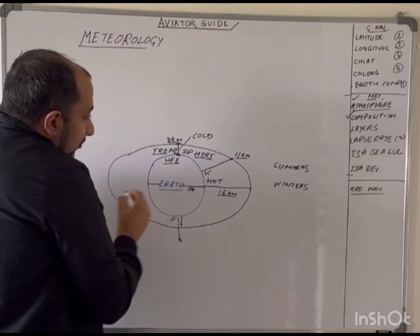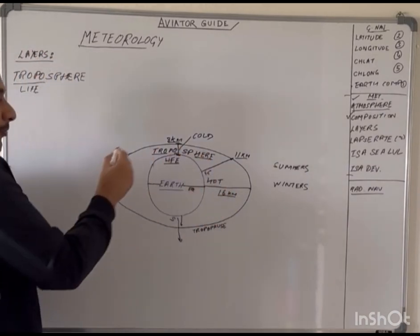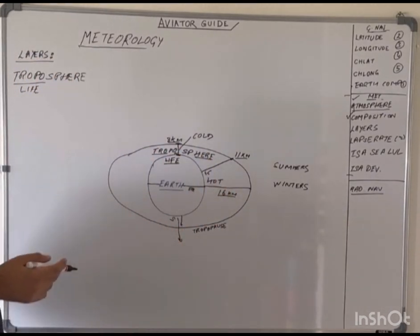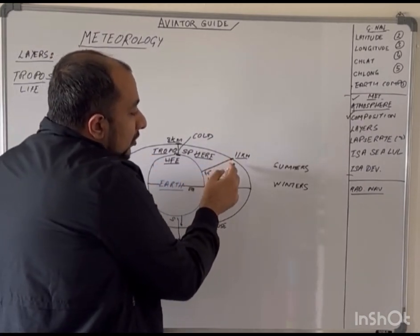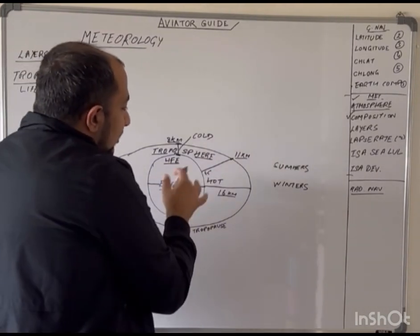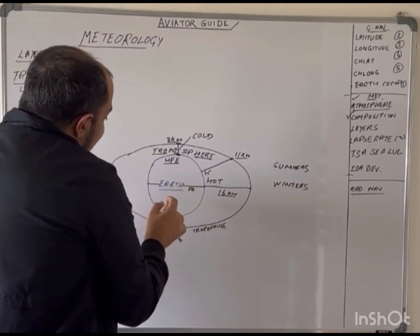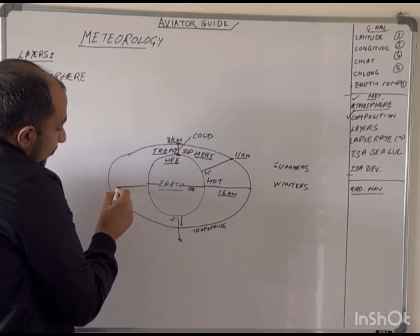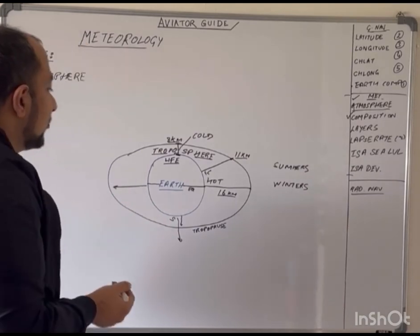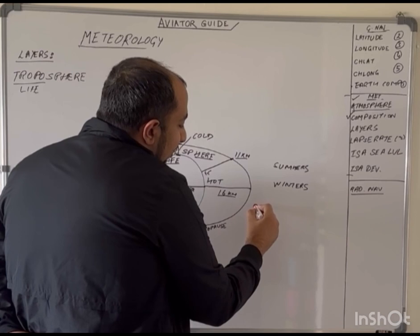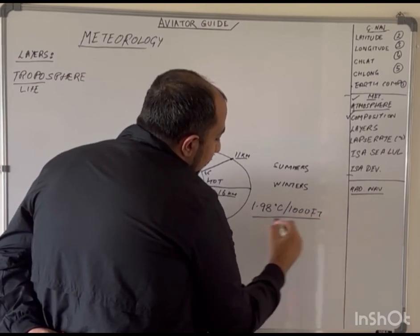The boundary of the troposphere is called the tropopause. The main feature of the troposphere is that the temperature decreases with altitude. As we go higher and higher in the troposphere, the temperature will decrease, and that decrease in temperature with altitude is about 1.98 degrees Celsius per 1000 feet. This is called the lapse rate.